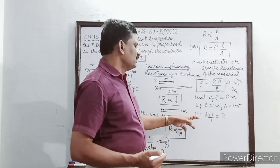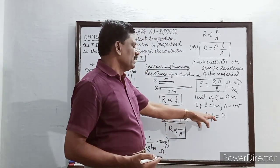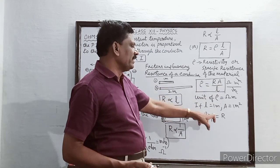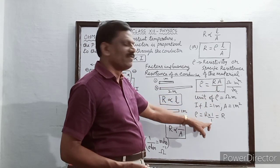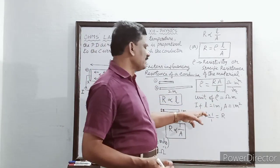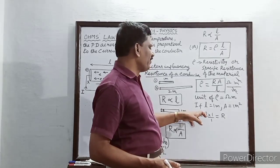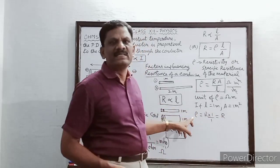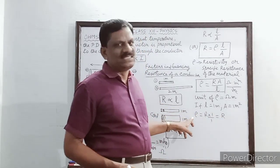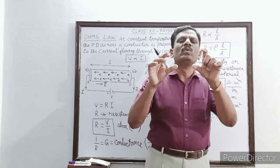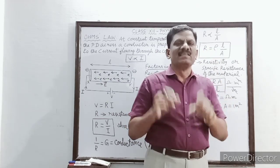To define specific resistance: when the area of cross section is one metre squared and the length of the wire is one metre, then ρ = R × 1/1 = R. So when length equals one metre and area equals one metre squared, the resistance offered by the material equals its resistivity.